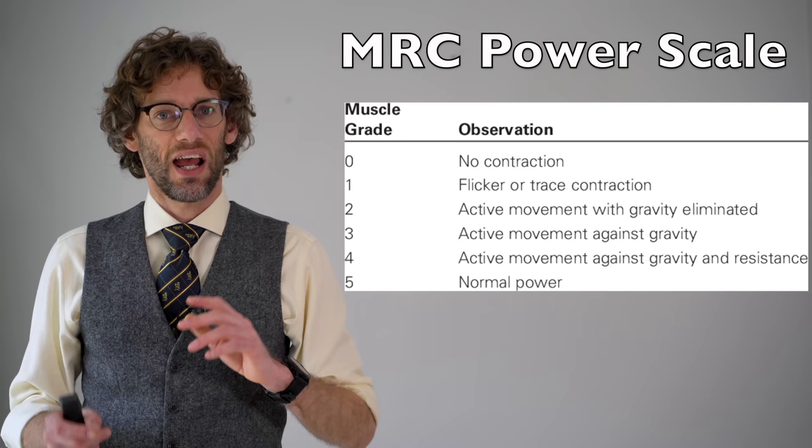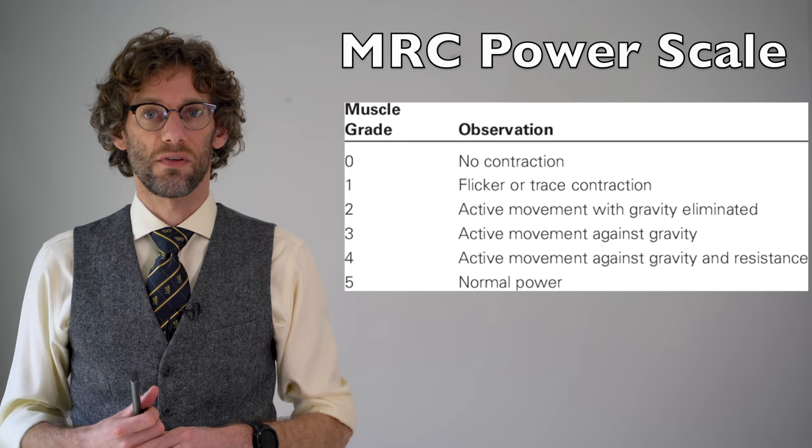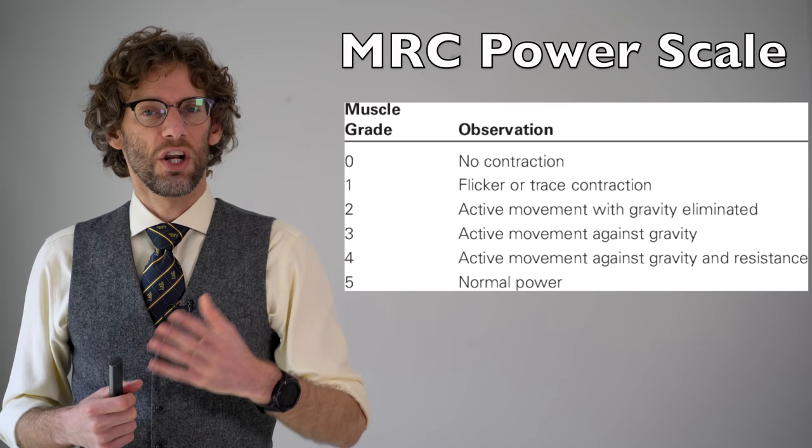Normal power, grade five, is just that — you'd expect the patient to be able to push and pull you as you'd expect. Grade four is they can do all the movements and push against you, but they're just weaker than you'd expect. That's the part of the rating where it's slightly difficult to be confident.